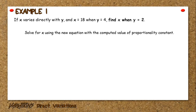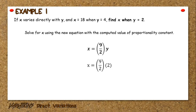Solve for x using the new equation with the computed value of the proportionality constant. Using the equation x equals k times y, substitute the proportionality constant, which is 9 over 2, and the value of y, which is 2. x equals 9 over 2 times 2. x equals 9.